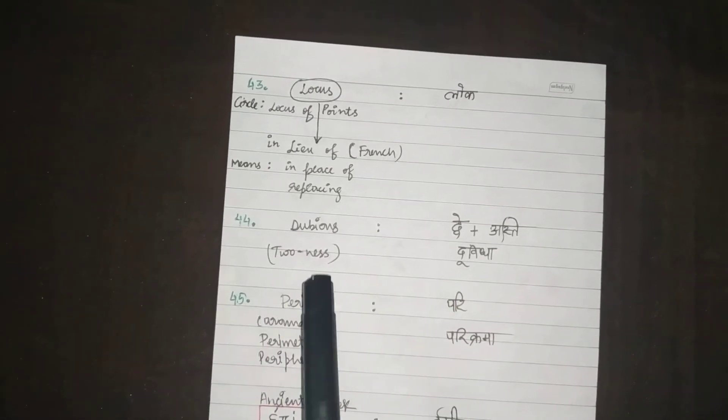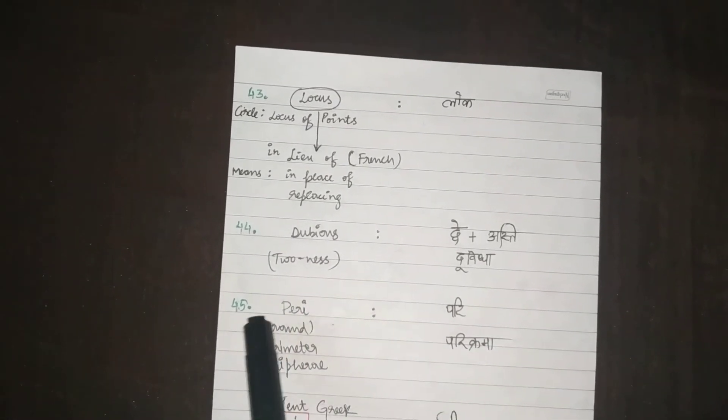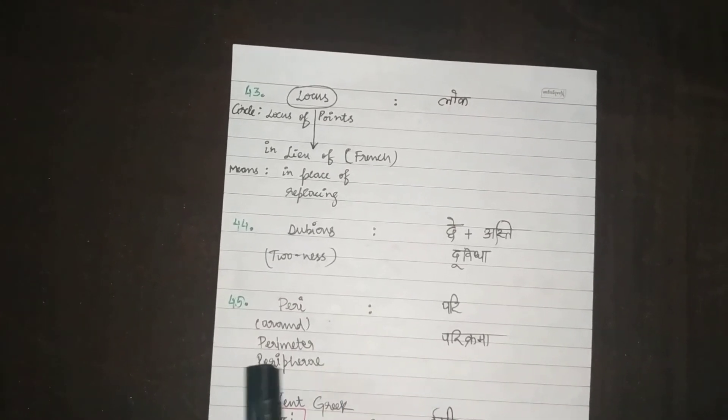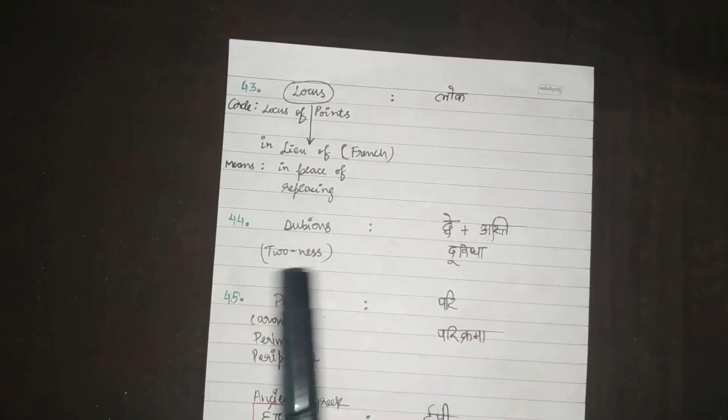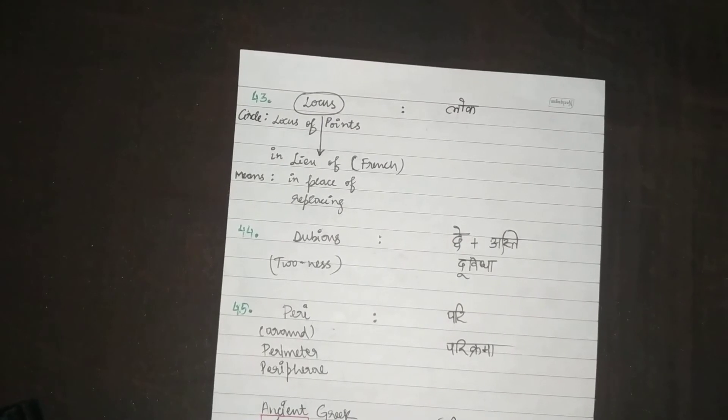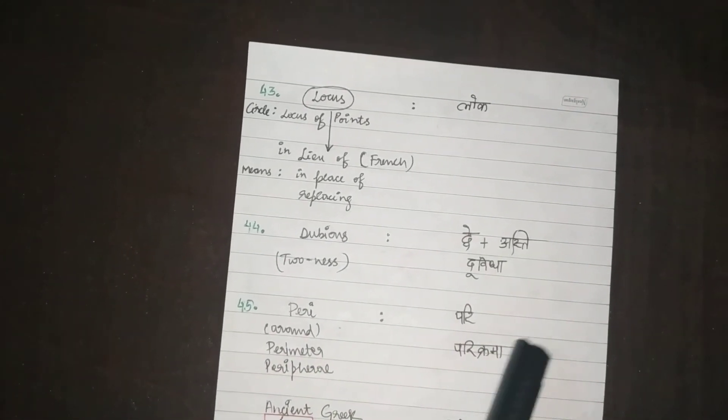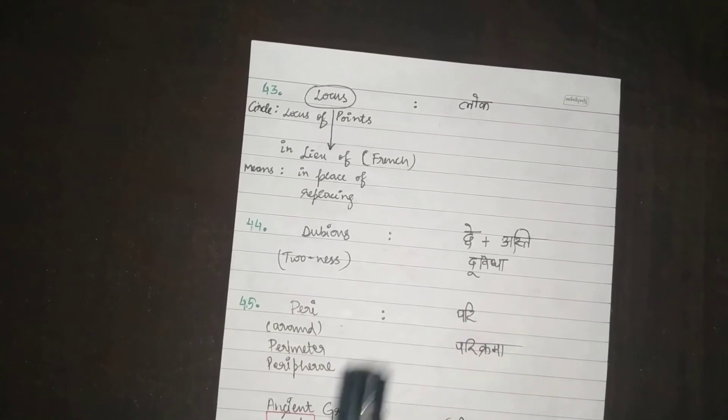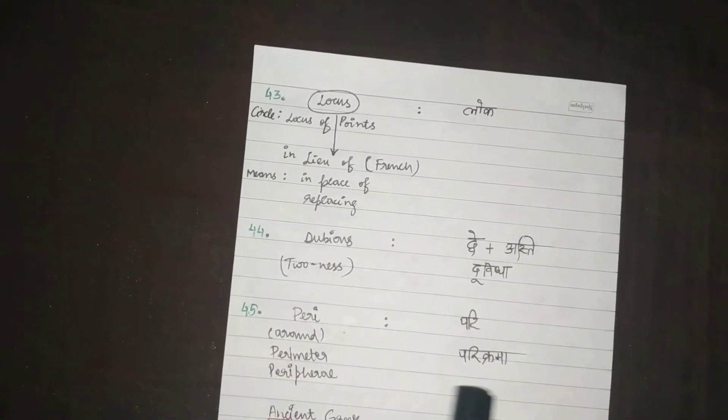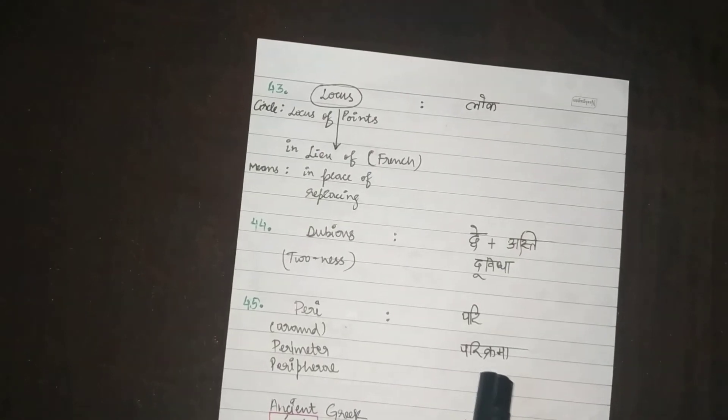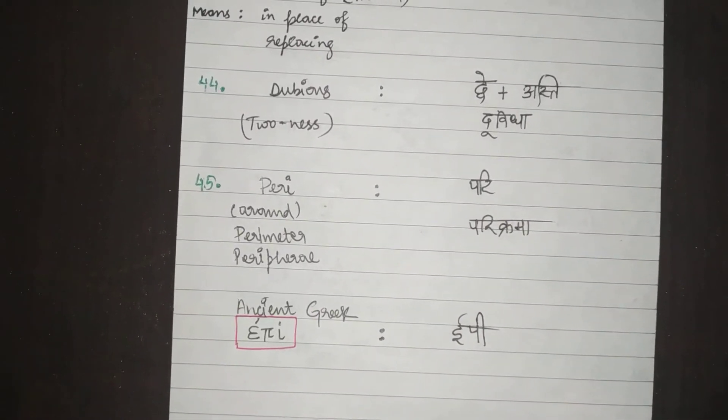Peri, the English word Peri. For example, the perimeter, peripheral. The word Peri means around. It's a prefix. Similarly, in Sanskrit, the word we have is Pari. Parikrama. Parimaap.